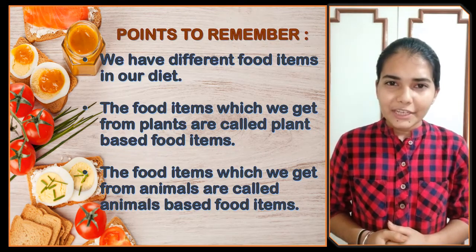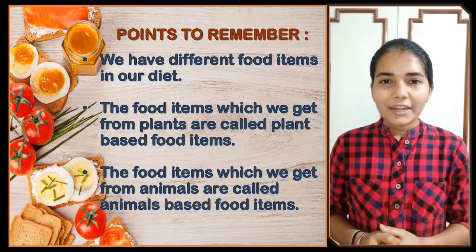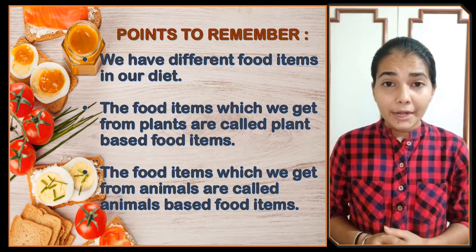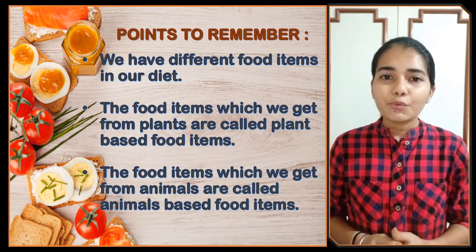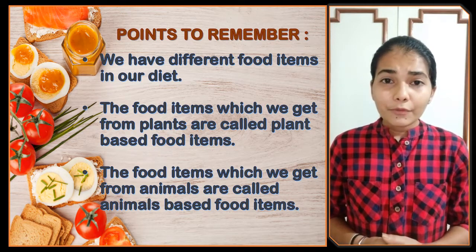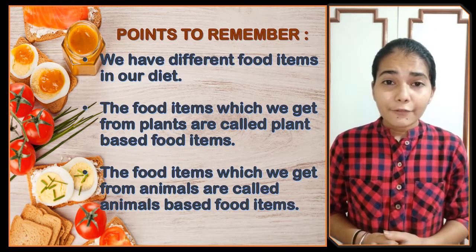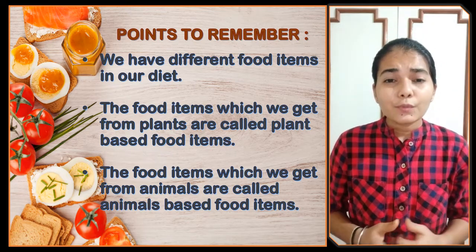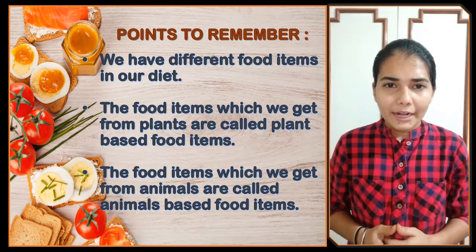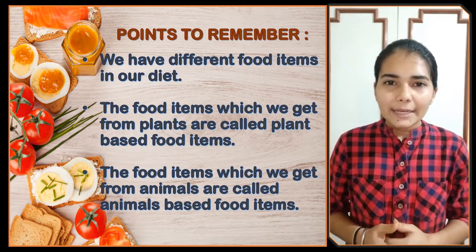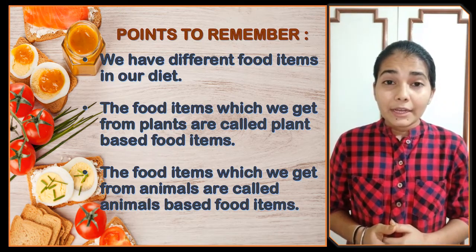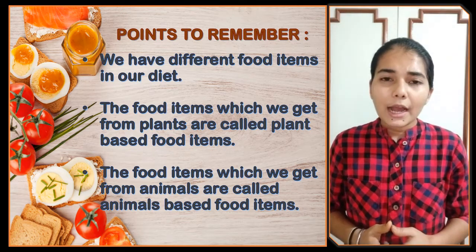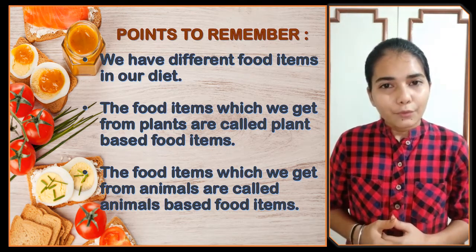In the previous class I told you that we have different types of food. The food which we have provides us with energy to work and play. Some of the food items we get from plants while some of the food items we get from animals. Those food items which we get from animals are known as animal based products, while those which we get from plants are known as plant based food items.